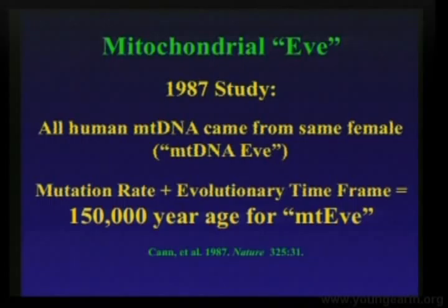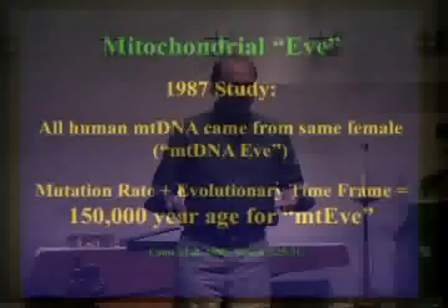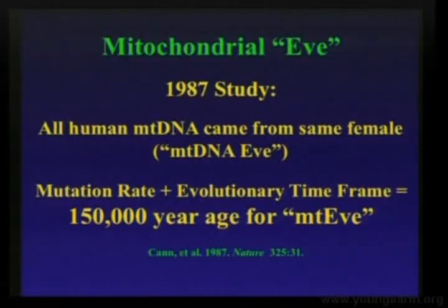Now, creationists of course really love this, because this is very consistent with Eve of the Bible. In fact, even the evolutionists called her mitochondrial Eve — not out of any respect for the Eve of the Bible, more as a tongue-in-cheek joke. But what it's allowed us to do is go to public schools and talk about Eve, because it's right there in the literature. So God's able to get in there even in the face of where they're trying to spit at him. What they determined was that this Eve lived based upon the mutation rate — it's right there.